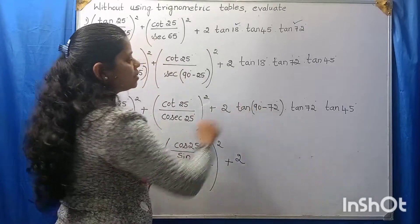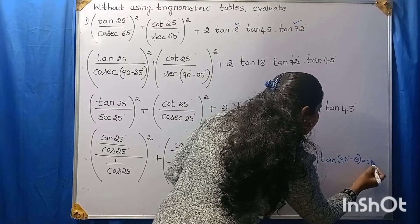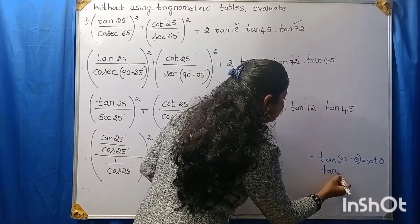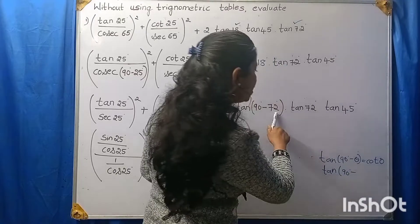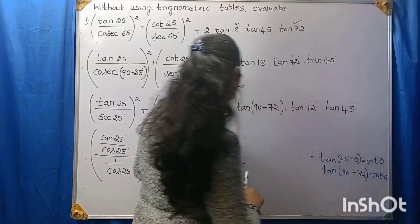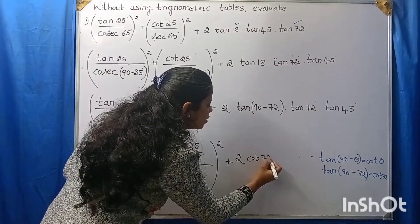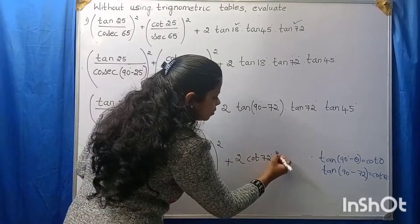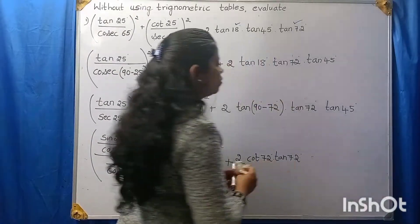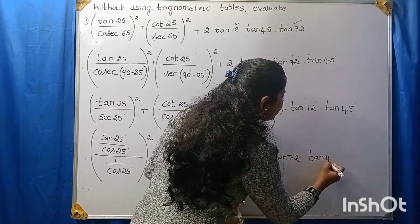Tan(90° − θ) — what will it become? Tan(90° − θ) is cot θ. In the same way, tan(90° − 72°): in the place of θ we have 72°. Therefore, it will become cot 72°. So this one I can write as cot 72° into tan 72° into tan 45°.